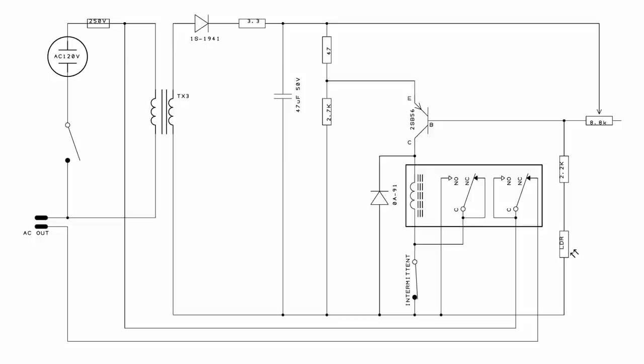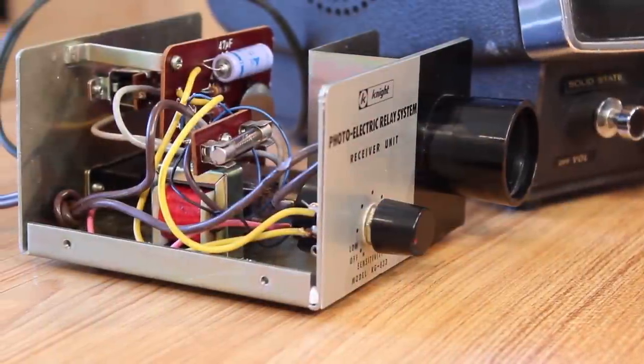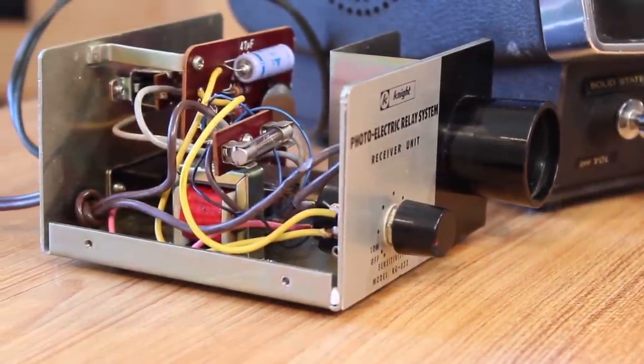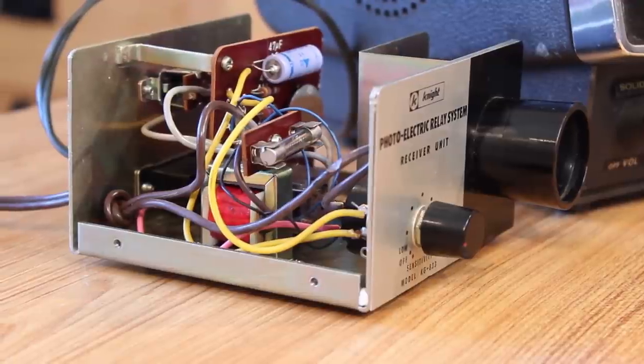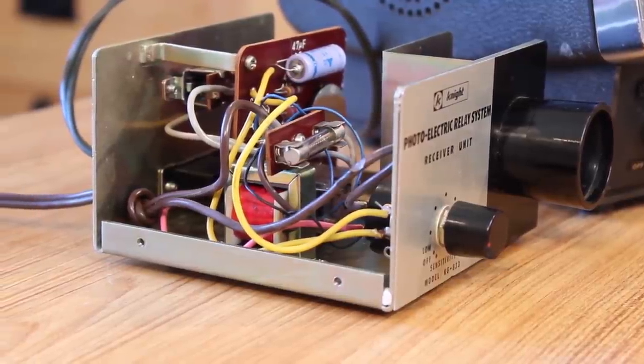And I think that covers just about everything in here, except for the little OA91 diode here. And I believe that's just a flyback diode for the relay coil so that when you de-energize the relay coil, the inductive spike doesn't kill our PNP transistor. So there we have it. We have successfully reverse engineered the Knight photoelectric relay system receiver unit.